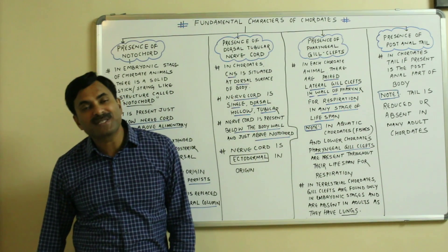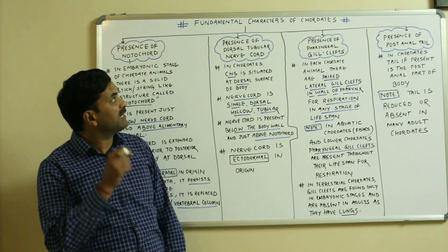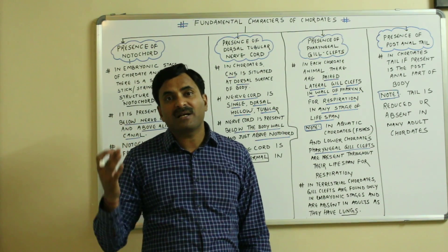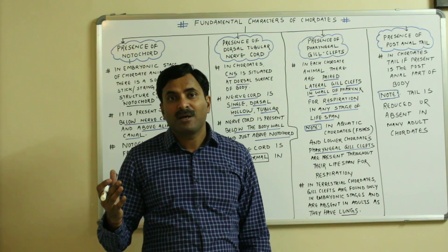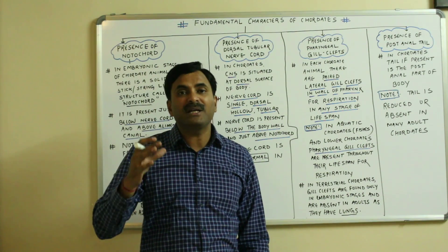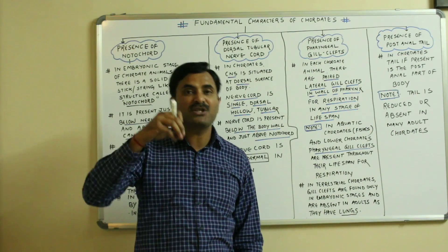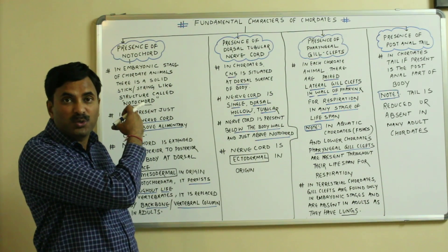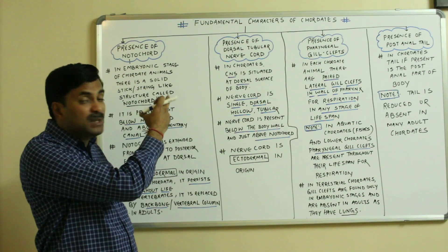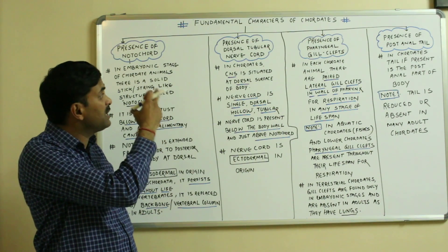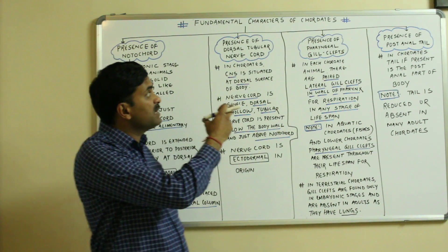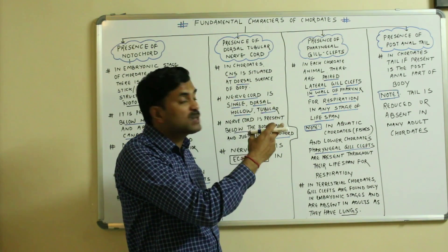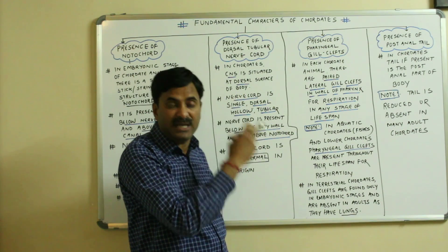Hello to all. Today we will be discussing the fundamental characteristics of the chordates. As we know, there are many characters found in the chordates, but there are few fundamental characteristics which are the features of the chordates. The first one is the presence of the notochord, the second is the presence of the dorsal tubular nerve cord, the third is the presence of the pharyngeal gill clefts, and the fourth is the presence of the post anal tail.